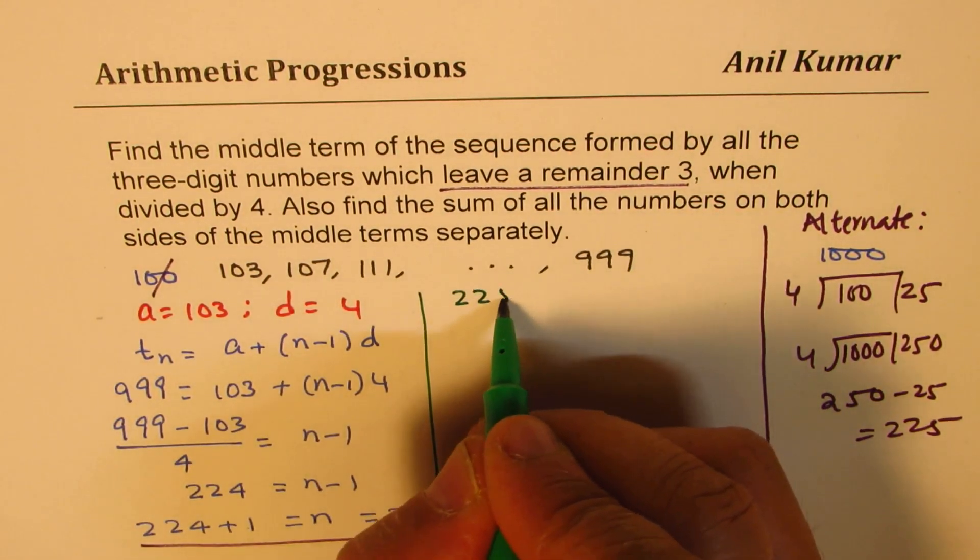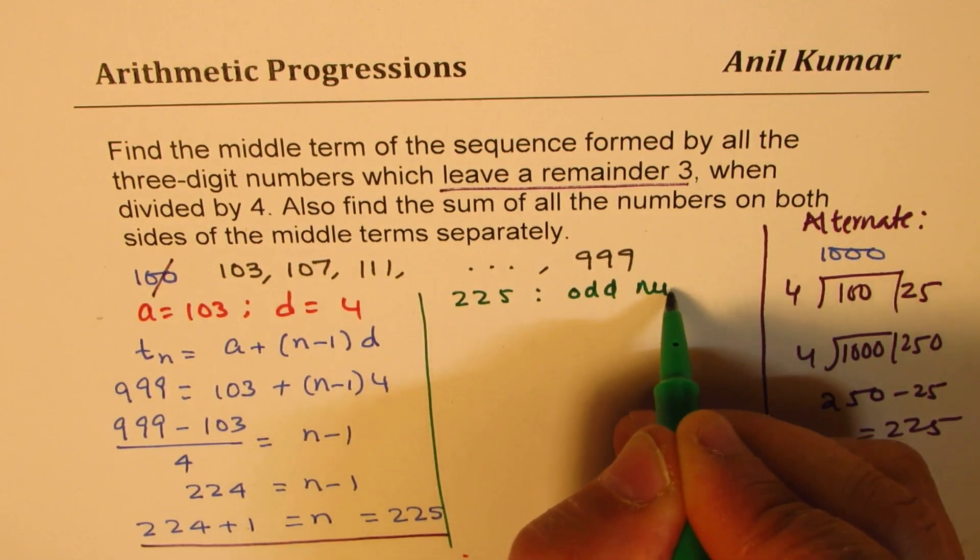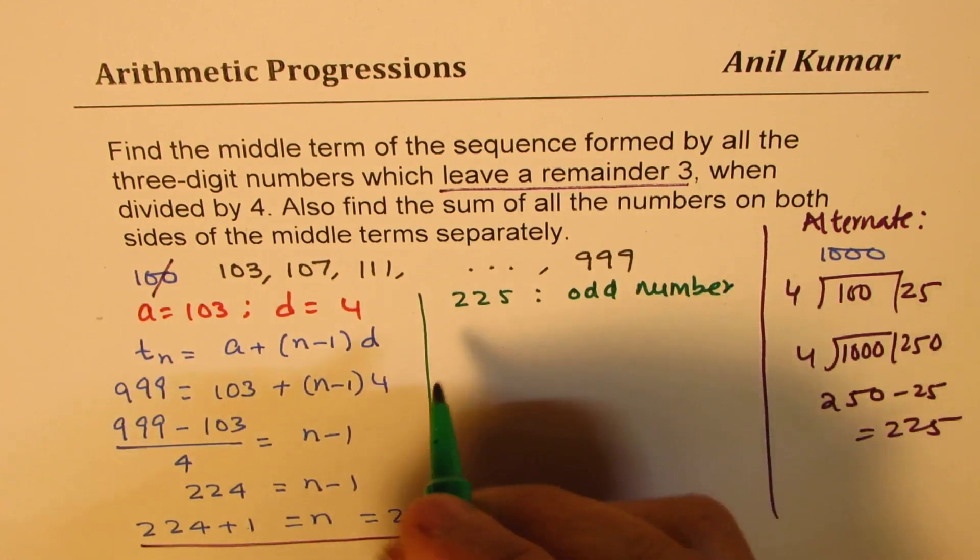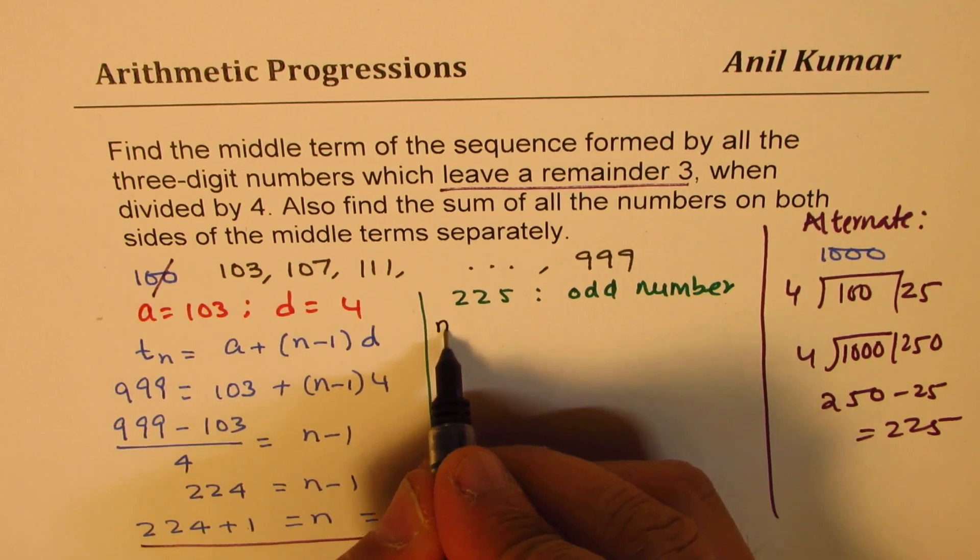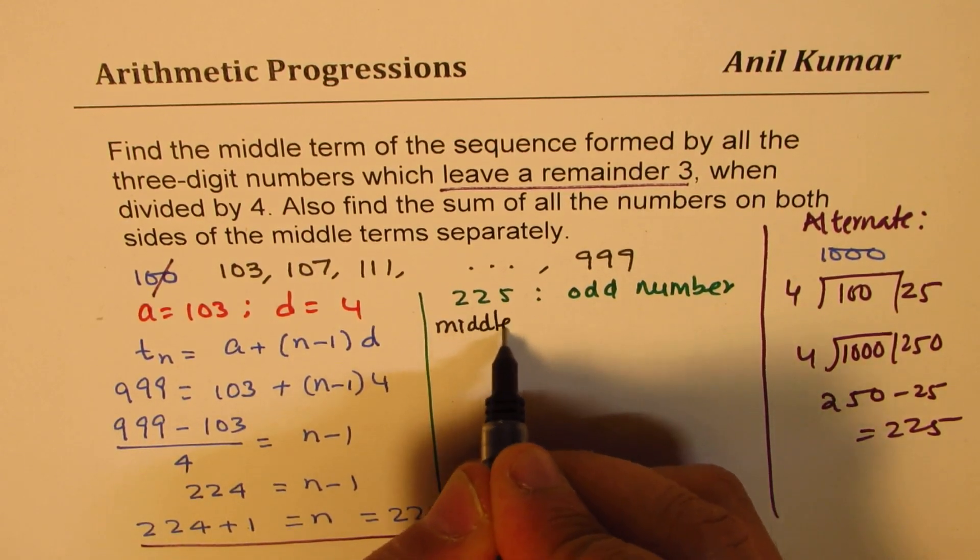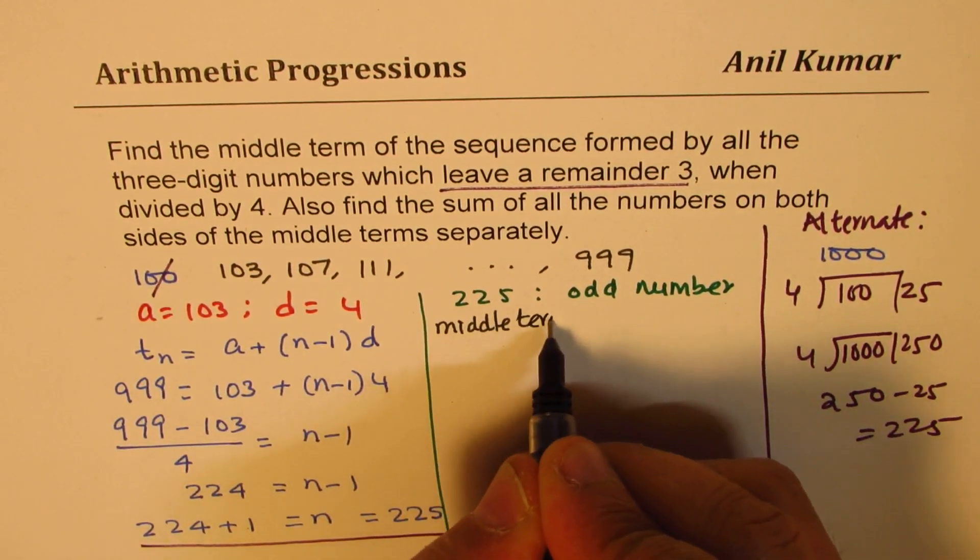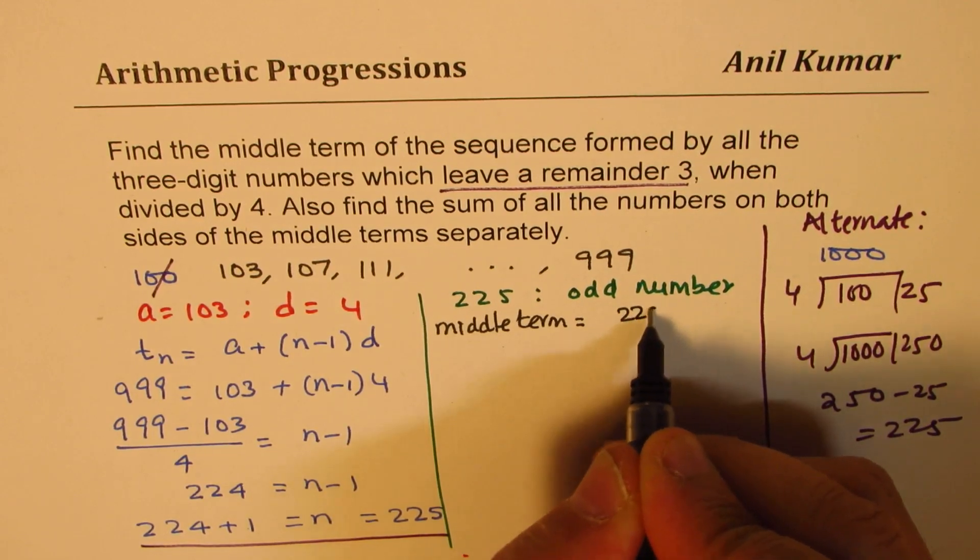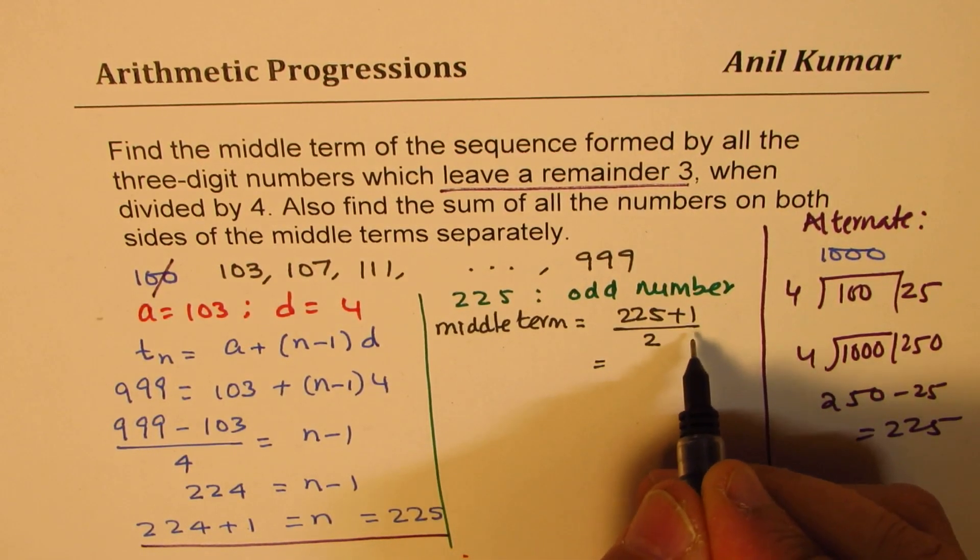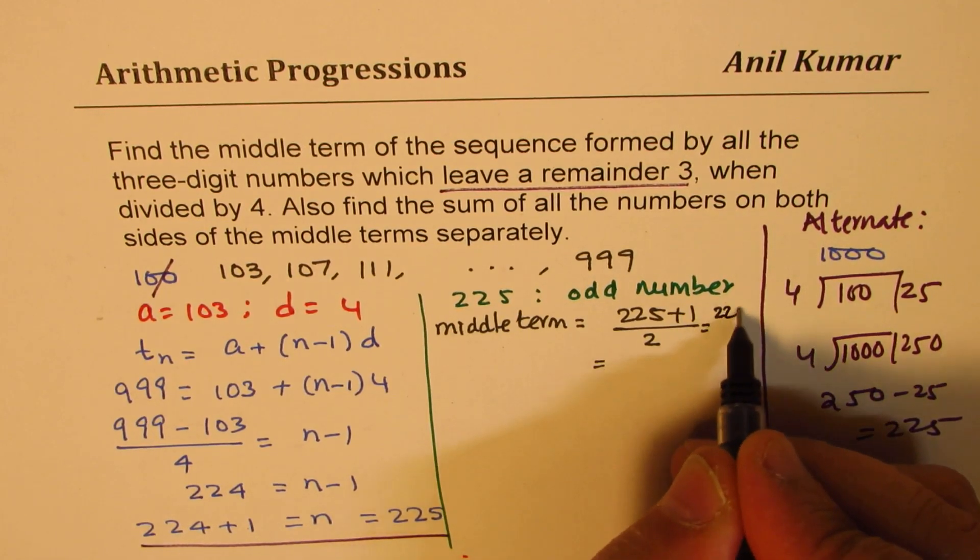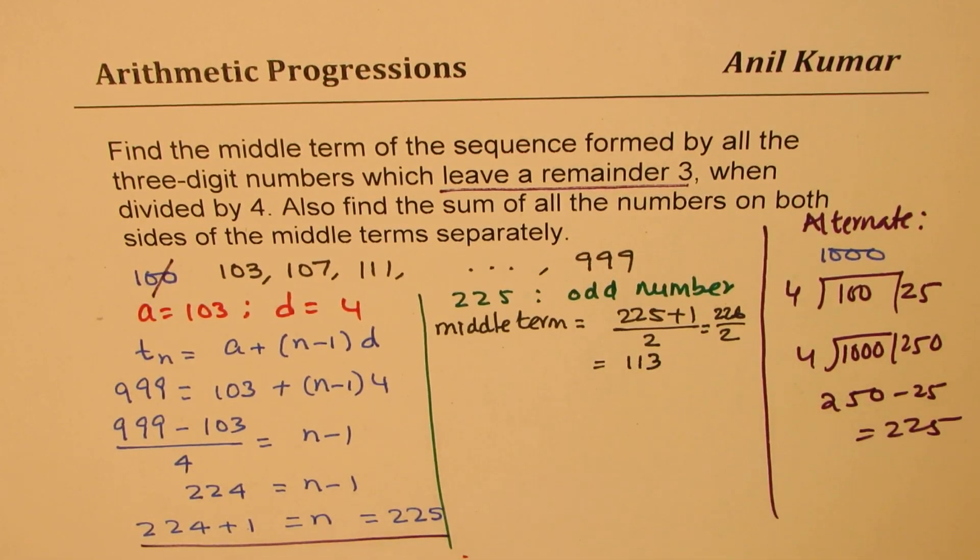So 225 is odd number. So the middle term will be what? Middle term will be 225 plus 1 divided by 2. So 226 divided by 2, which is 113. So the middle term is 113.